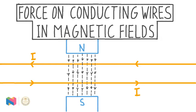In this video, we're talking about force on conducting wires in magnetic fields. The fact that putting a conducting wire in a magnetic field can make it experience a force may come as a surprise, but as we'll see in this lesson, there are circumstances where indeed this takes place.